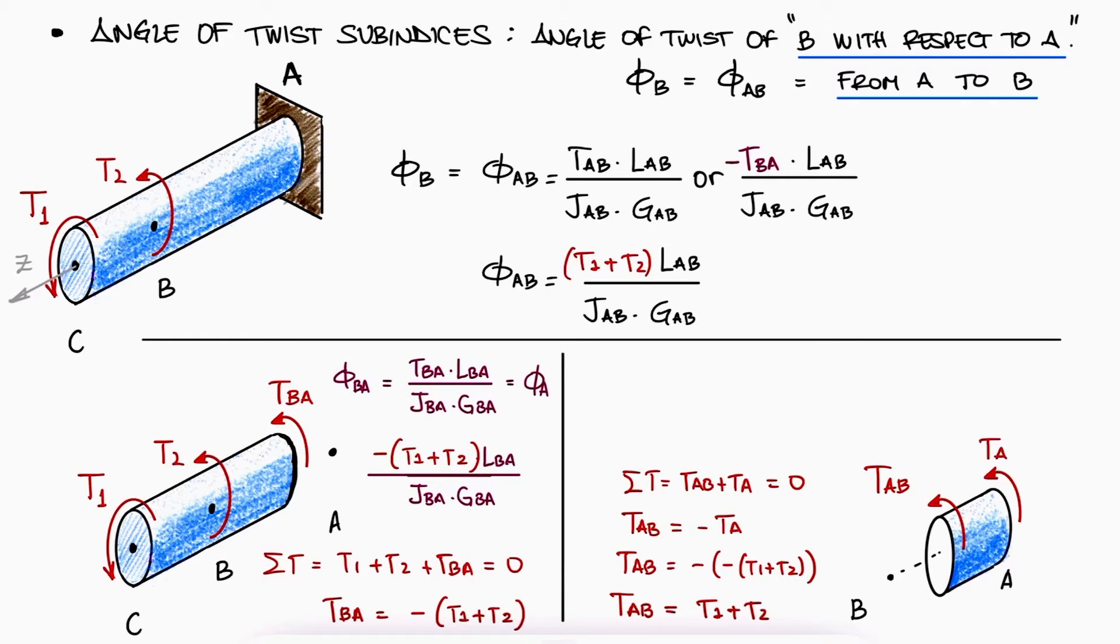The negative value for phi BA means that A is rotating in a clockwise direction, but only with respect to B, which is true. In a frame of reference where B isn't rotating, then A is rotating clockwise, but since A is the wall and can't rotate, we know that B is the only one rotating in the opposite direction.